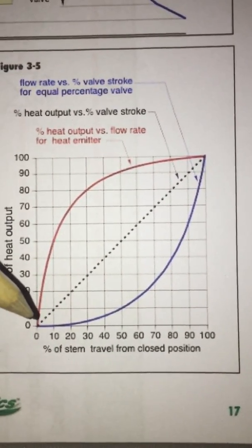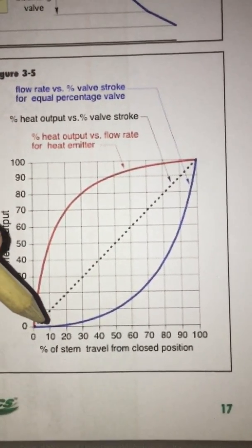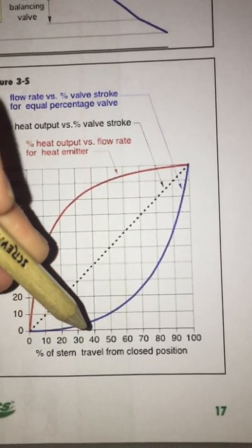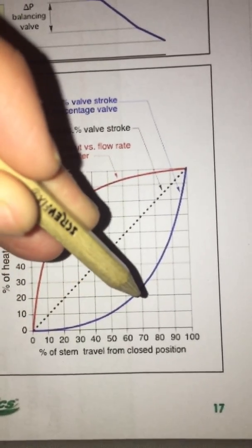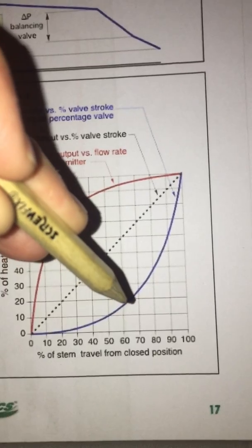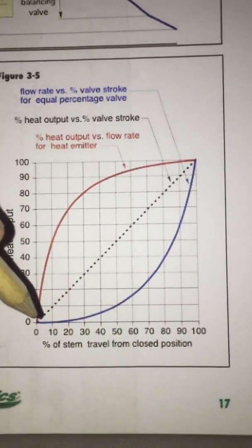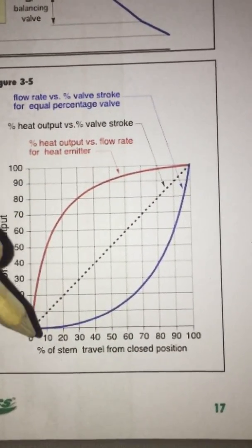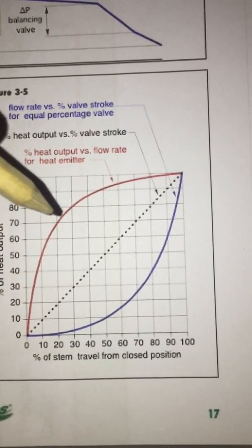So you can see on the high authority valve, when we open the valve we get a nice gradual increase in flow, more proportional to the valve opening. On the low authority valve here, we crack the valve open a small amount, we get a sharp increase in flow.